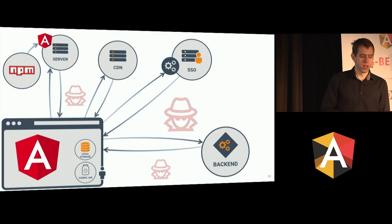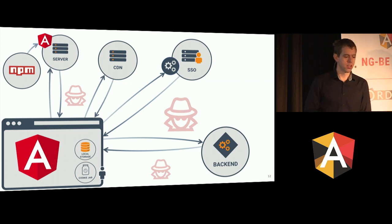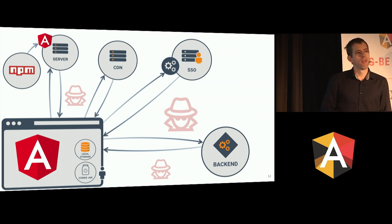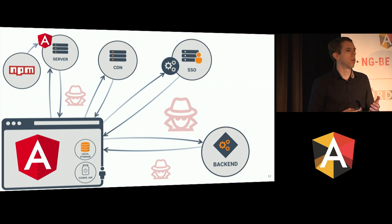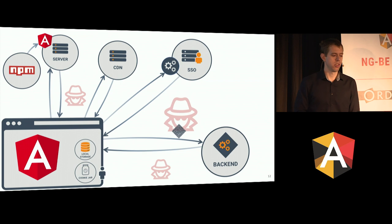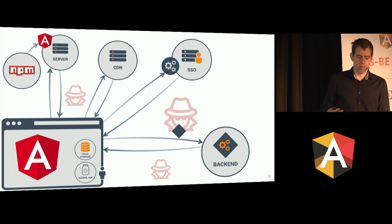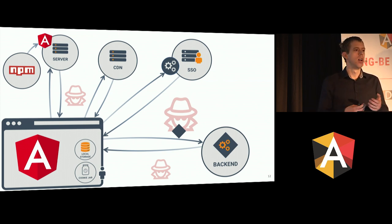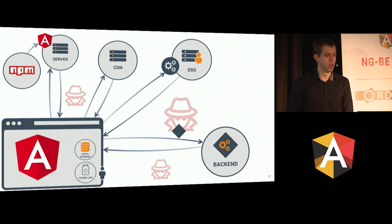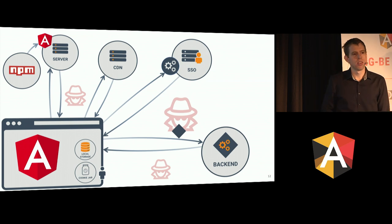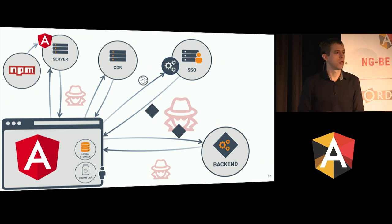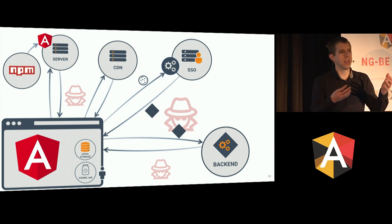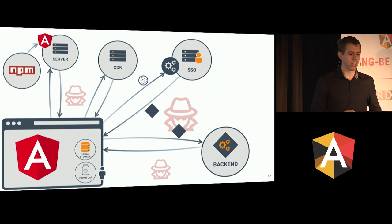One down, a couple more to go. If you have your application, one of the first things you want to do is communicate with your backend. You'll need some way to relay authorization information — who is making the call, should this be allowed? A common way to do this is to use an authentication service to authenticate the user and obtain some kind of access token or session object.